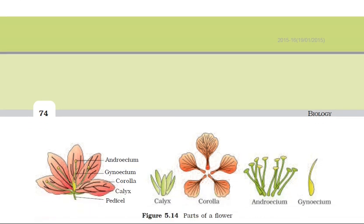Here on the screen you can see the parts of the flower: calyx, corolla, gynoecium, and androecium. Regarding the corolla, if the petals are united, the corolla is gamopetalous. And if the petals are free, the corolla is termed polypetalous. Generally, petals are bright in color because they have to attract insects for the process of pollination.